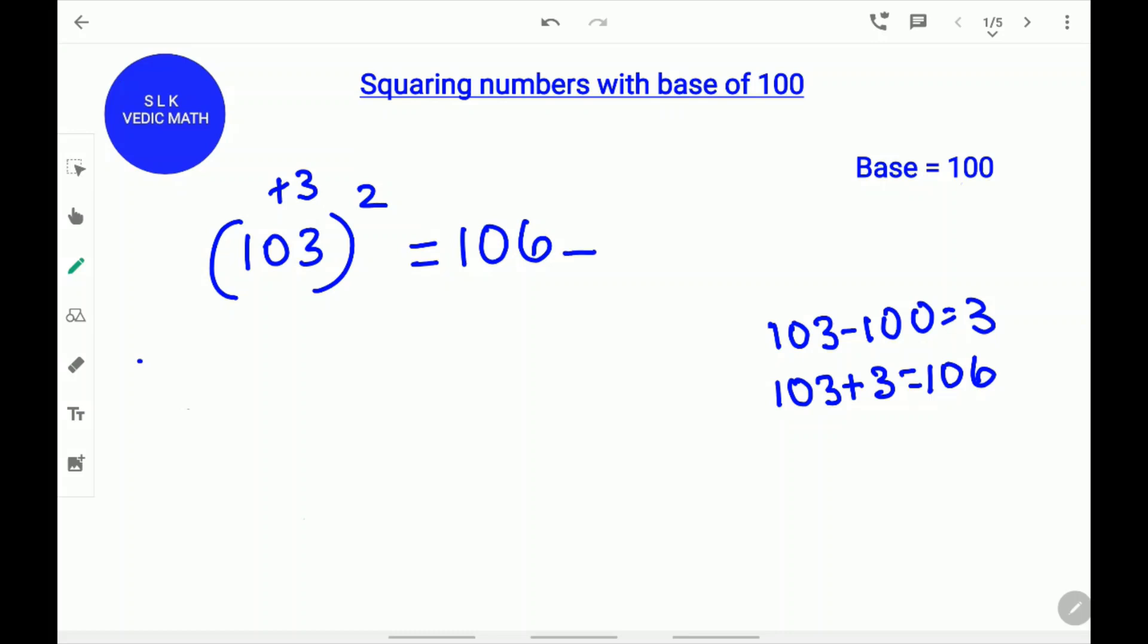We have two more digits to go since there are two zeros in 100. Now, square this difference 3. 3 square is 9. Write 9 as 09 because there are two zeros in 100.